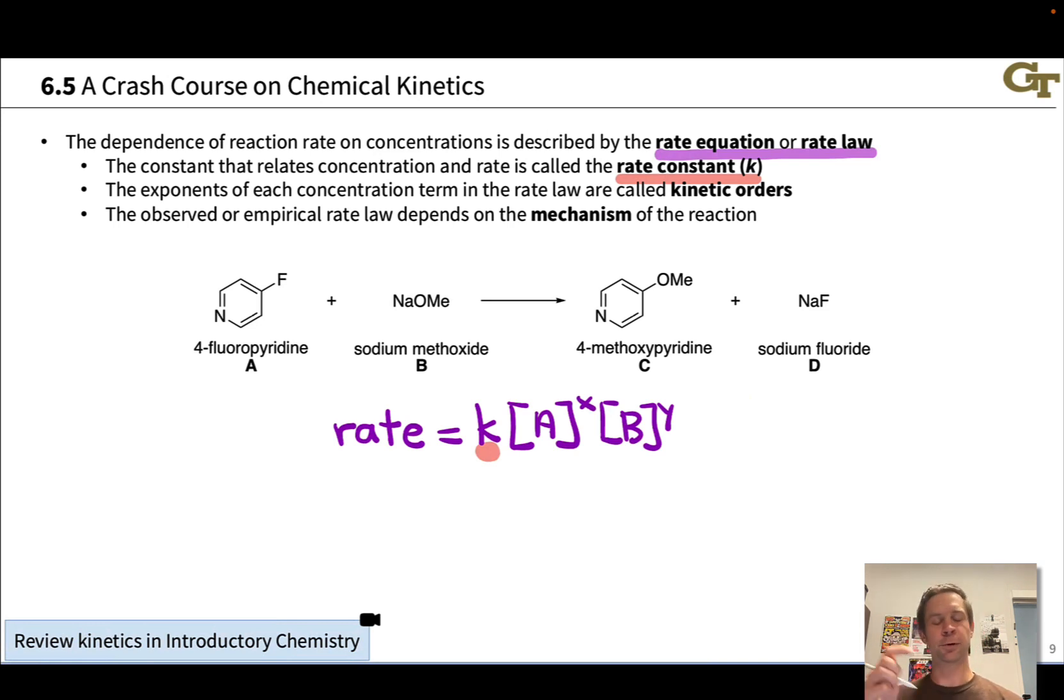Each of the exponents associated with each reactant gets a term, and it's called the kinetic order with respect to that reactant or of that reactant. We can also talk about the overall order of the reaction as the sum of these numbers.